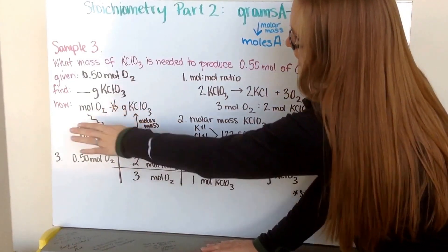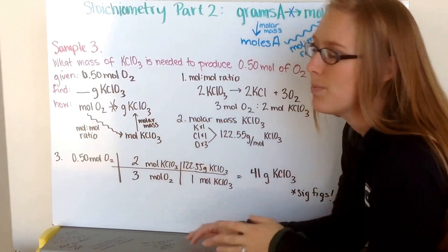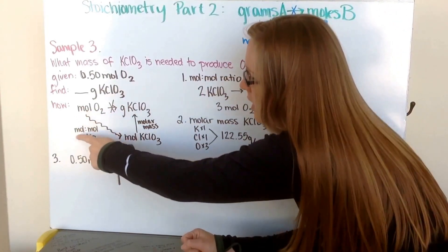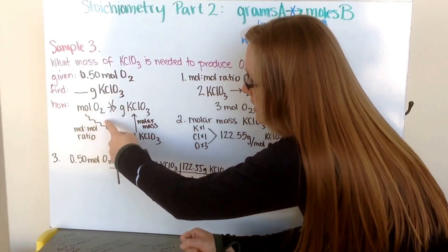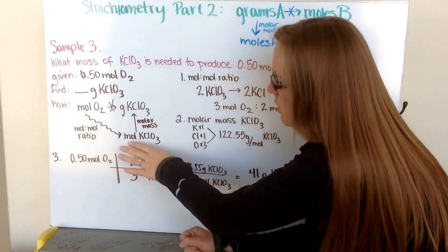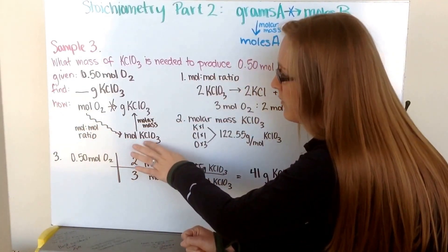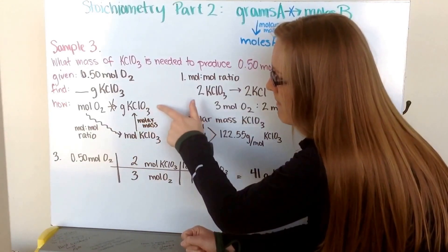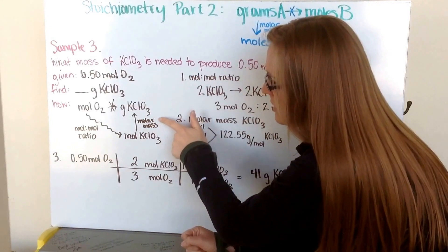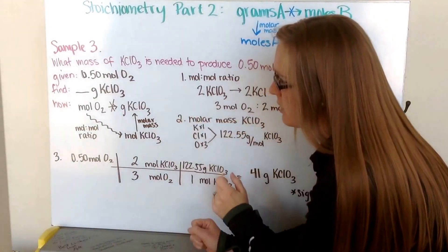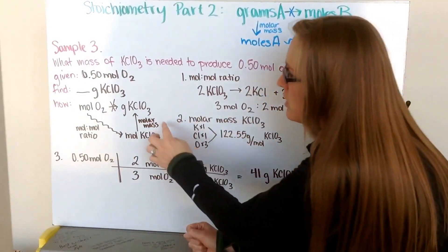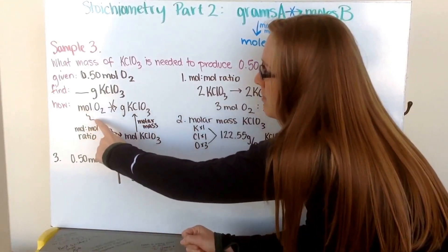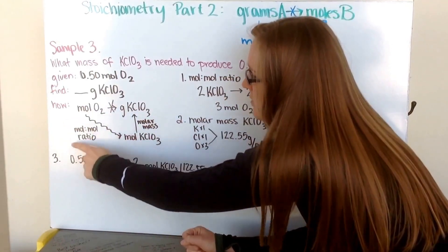But I can't go that direction — it doesn't exist. I don't have a pathway to get me there. So first I need to cross my river using the mole-to-mole ratio, going across my causeway to convert to moles of potassium chlorate. Then from moles of potassium chlorate, I can go up to my mass mountain using my molar mass as my conversion factor. There are two different things I need to make this first conversion.